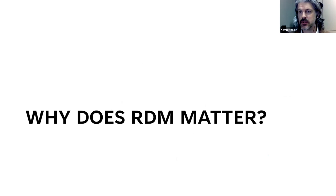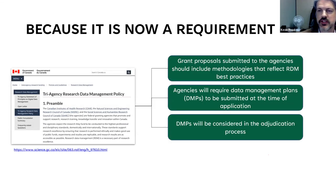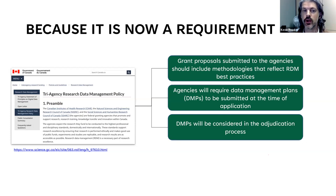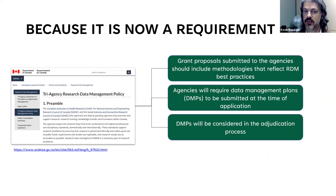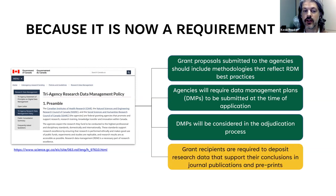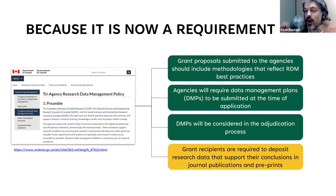Why does data management matter especially right now? The main driving force is that it's becoming a requirement from the tri-agency. Starting in 2023, any grant proposal submitted to the agencies should include methodologies that reflect data management best practices. Every single grant will require data management plans to be submitted at the time of application, and they will actually be considered in the adjudication process. What we know is coming later — probably in 2024-25 — is that grant recipients will eventually be required to deposit research data supporting the conclusions in journal publications and preprints.